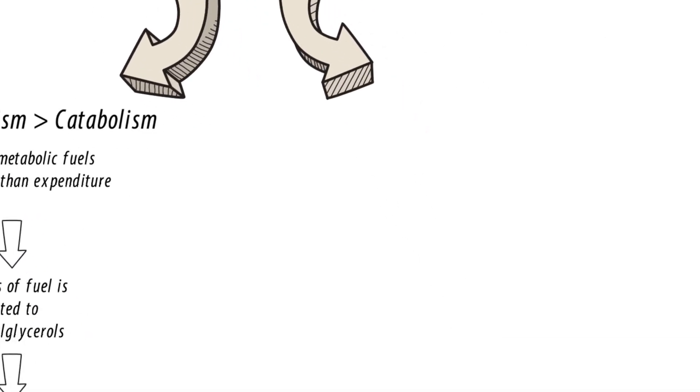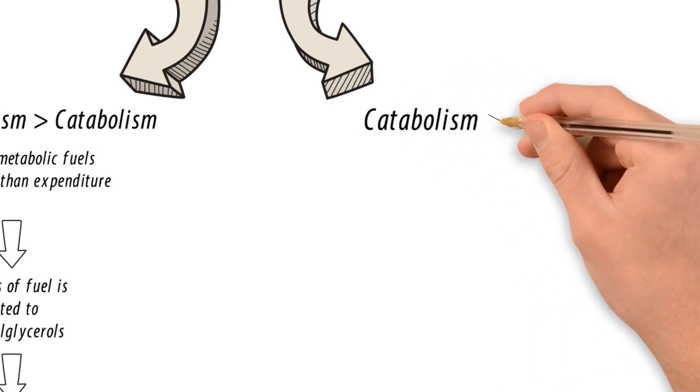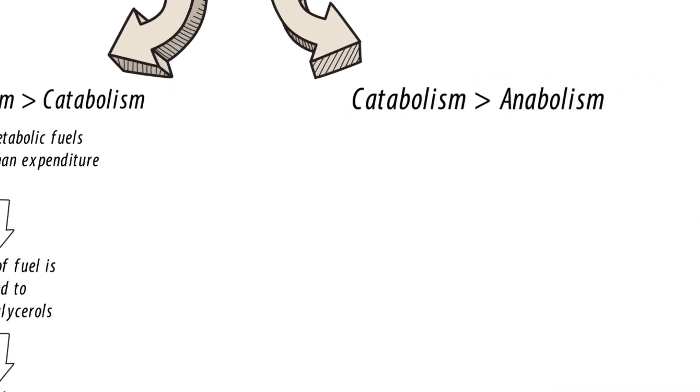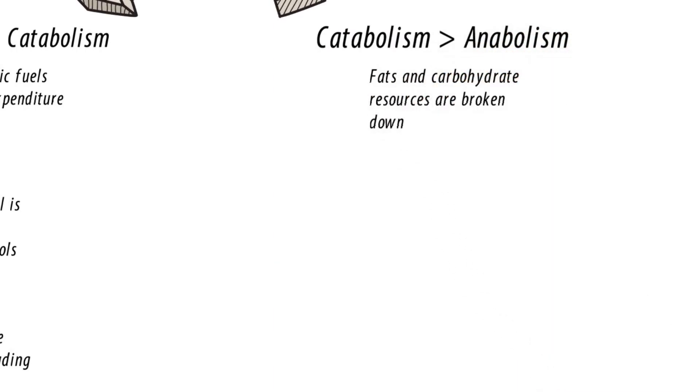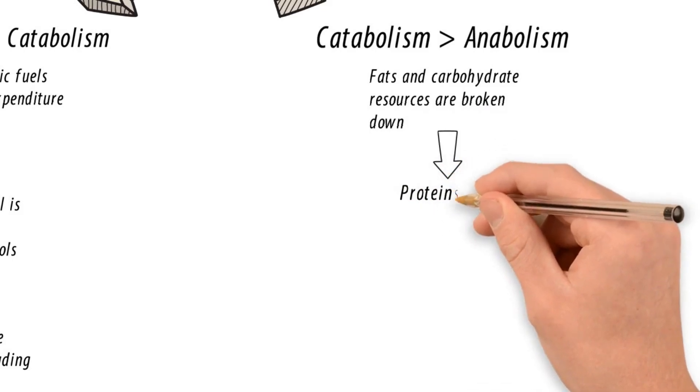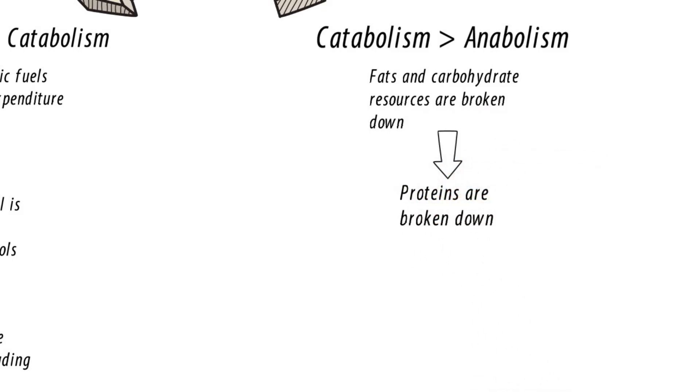In the second case, when catabolism exceeds anabolism, fats and carbohydrates are broken down for the production of energy. When their resources deplete, proteins are then broken down by gluconeogenesis for the production of energy. Now, since muscles are mainly made up of proteins, it leads to muscle wastage, emaciation and finally death.